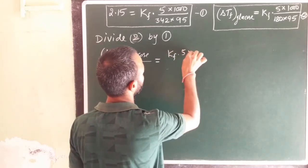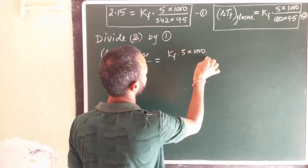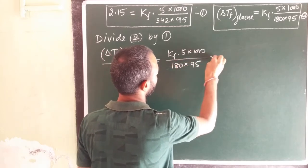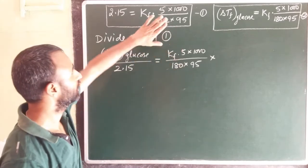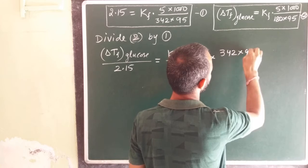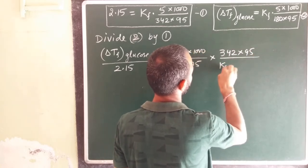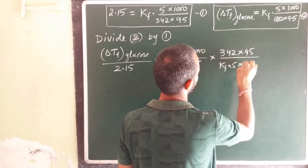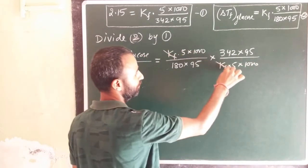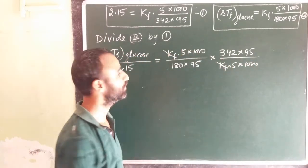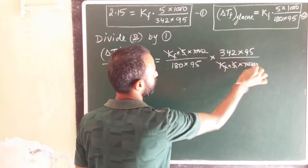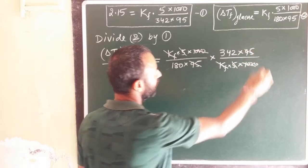So delta Tf of glucose divided by 2.15 is equal to Kf 5000 over 180 into 95, and reciprocate. Kf cancel, 5 cancel, 1000 cancel, 95 cancel.